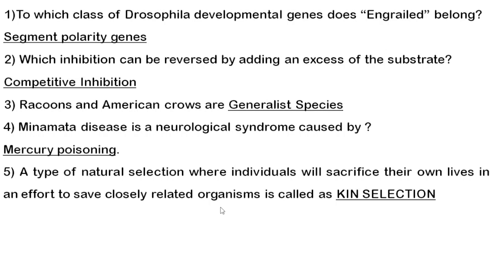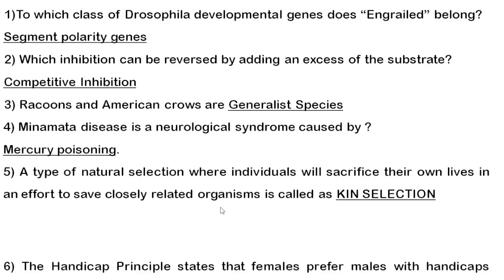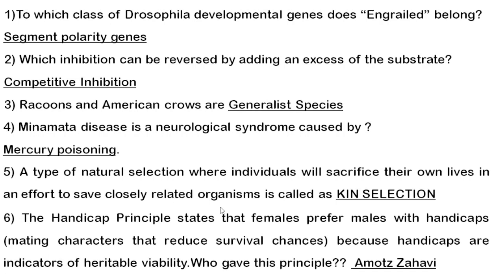Fifth question: the type of natural selection where individuals sacrifice their own lives to save closely related organisms is called kin selection. You need to know the difference between altruism and kin selection — don't confuse between the two.